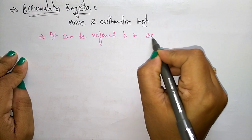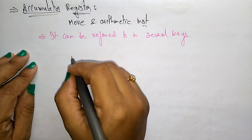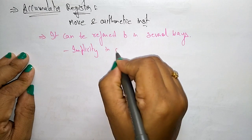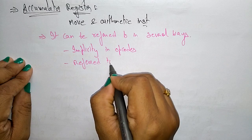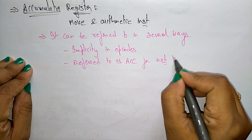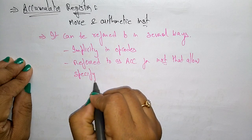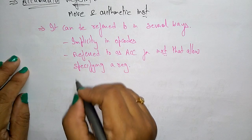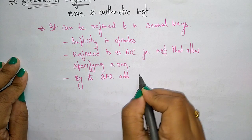The accumulator can be referred to in several ways: implicitly in opcodes, explicitly as 'accumulator' or 'A' for instructions that allow specifying a register, and also by its special function register address 0E0H.